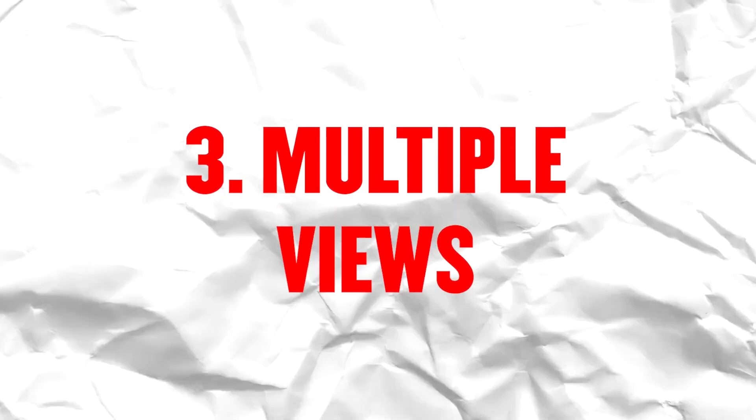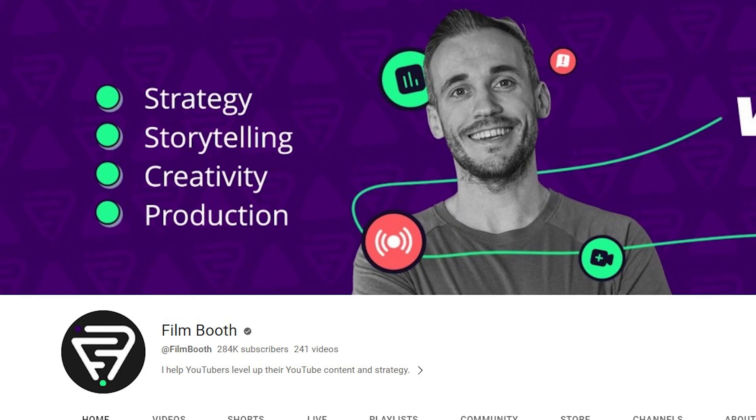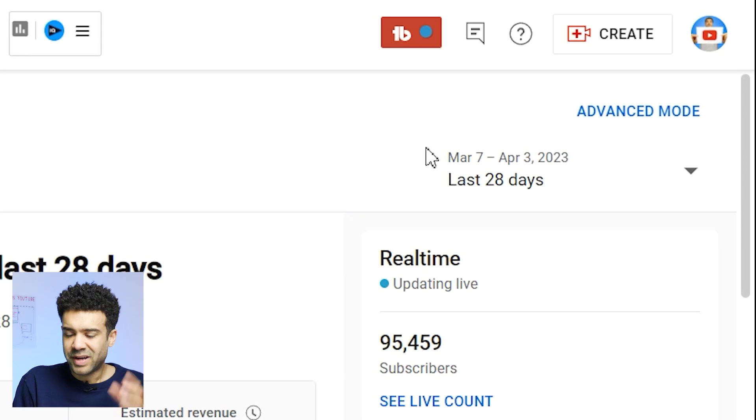Another way to increase watch time is to have viewers watch multiple videos of yours at a time, rather than watching one of your videos and then moving on to a different YouTube channel. YouTube expert Ed from Film Booth says that the best way to get people to watch more of your videos is by telling them to watch another one of your videos at the end of the video they're currently watching. In the last 20 seconds of your video, known as the end screen, you can tell your viewers which video to watch next and give them a link to click.